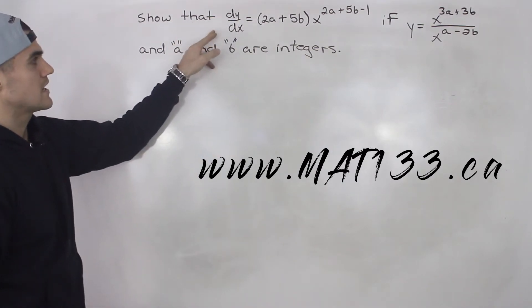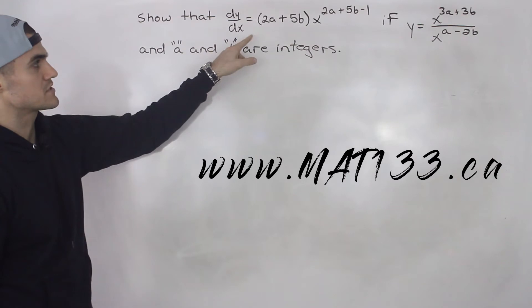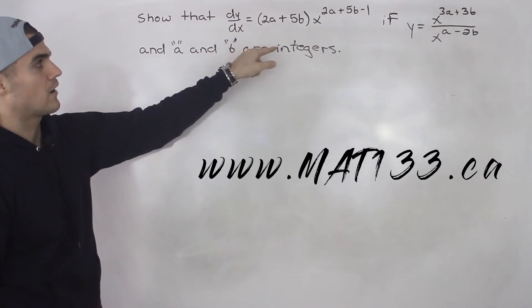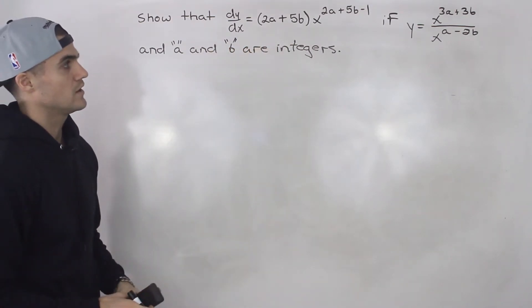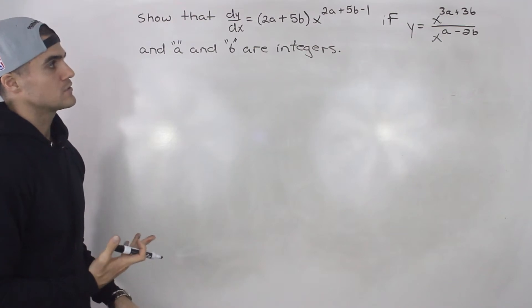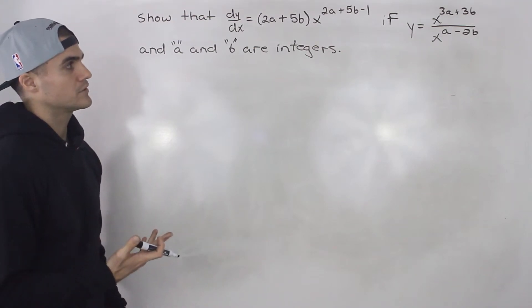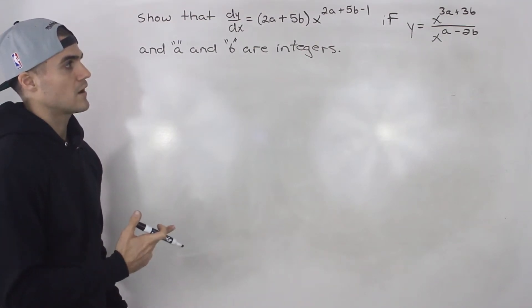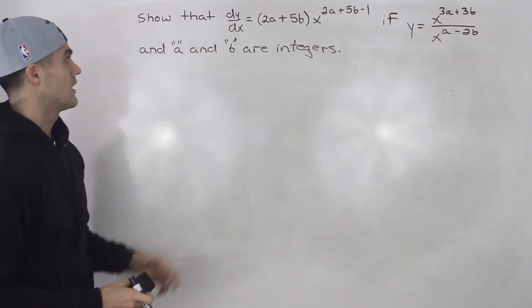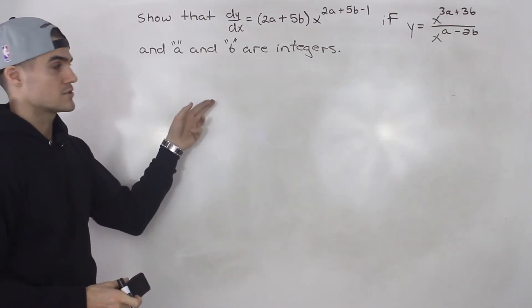Show that dy/dx equals (2a + 5b)x^(2a + 5b - 1) if y equals x^(3a + 3b) over x^(a - 2b), and a and b are integers.